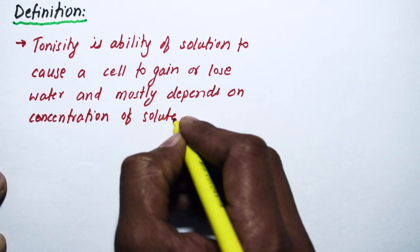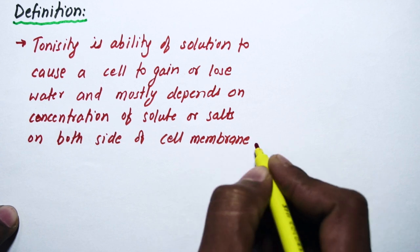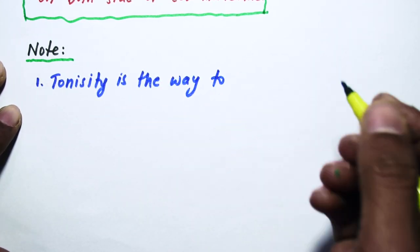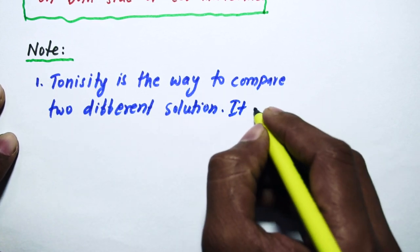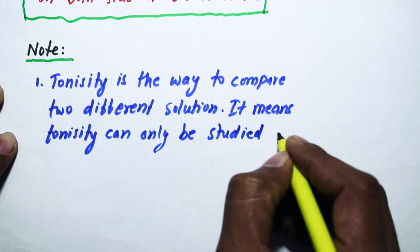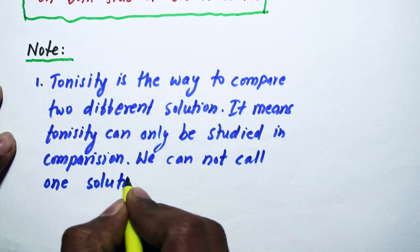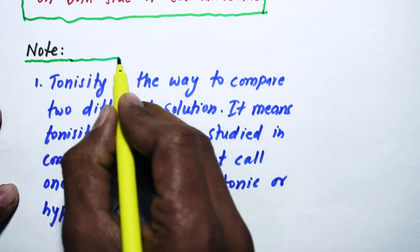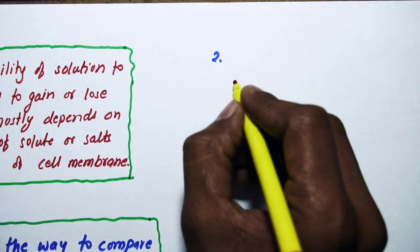Note: tonicity is the way to compare two different solutions. It means tonicity can only be studied in comparison. We cannot call one solution hypotonic or hypertonic on its own. There are a few words which, when they come as a prefix, have a specific meaning: hypo means less, iso means same, hyper means more.